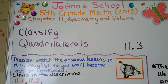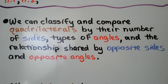Lesson 11.3: Classify Quadrilaterals. We can classify and compare quadrilaterals by their number of sides, types of angles, and the relationship shared by opposite sides and opposite angles.